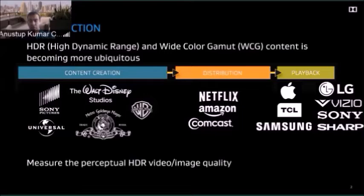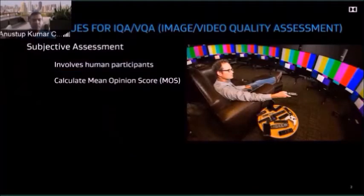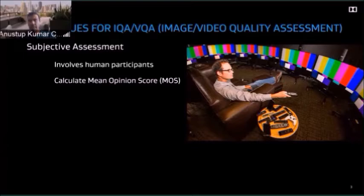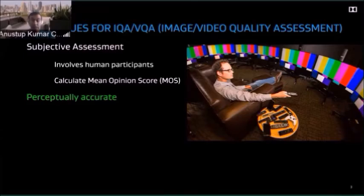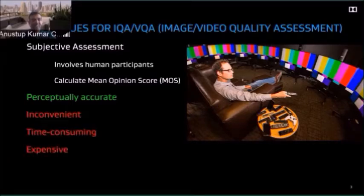We want to measure the quality of HDR content not just in the traditional sense, but also perceptually — what consumers are actually going to see. One way to measure image and video quality is subjective assessment, where people visually look at the content and give scores. You can then calculate the mean opinion score. This technique is perceptually accurate because a human is giving ratings, but it is not scalable — it takes a lot of time, human effort, and is expensive.